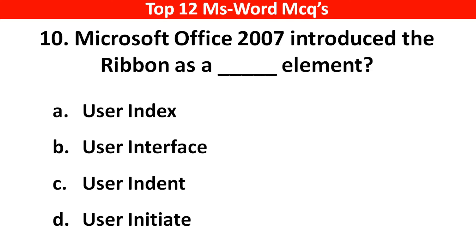Next question: Microsoft Office 2007 introduced the Ribbon as a ___ element. The right answer is option B: user interface.